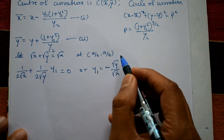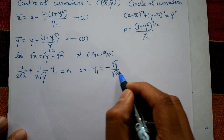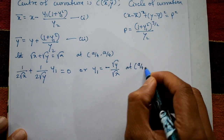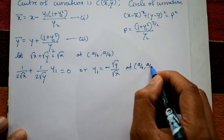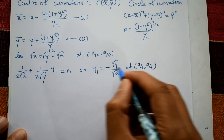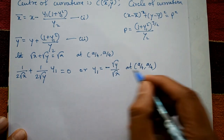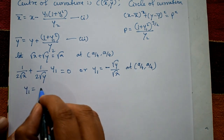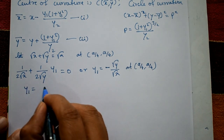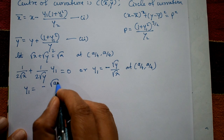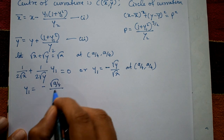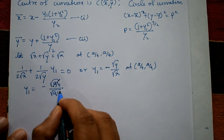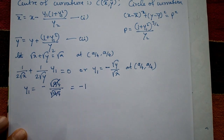So y1 = −√y / √x. At the point (a/4, a/4), substituting gives y1 = −√(a/4) / √(a/4), which cancels to give y1 = −1.